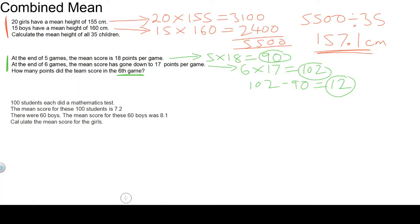Now the third question. 100 students each did a maths test. The mean score for these 100 students is 7.2. There were 60 boys. The mean score for these 60 boys was 8.1. Calculate the mean score for the girls.